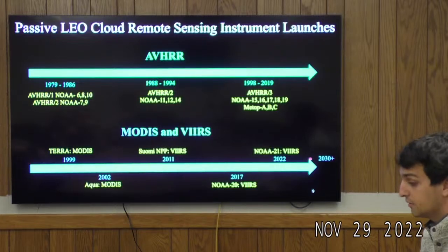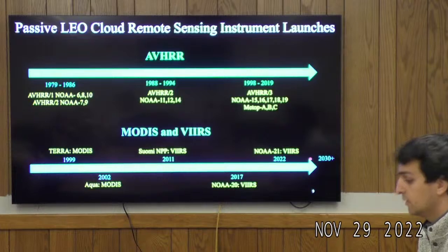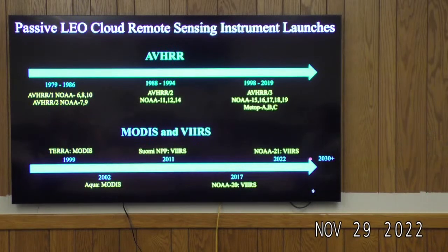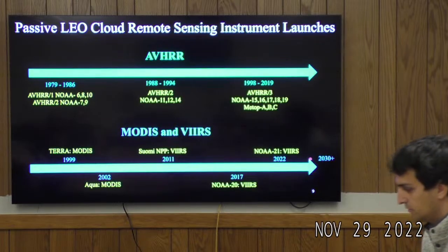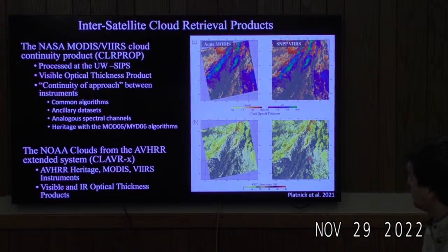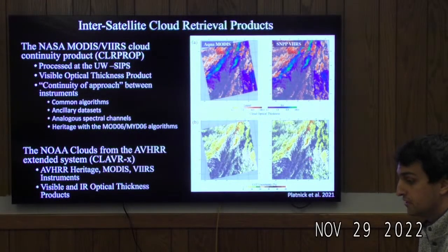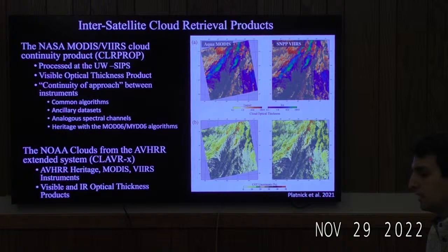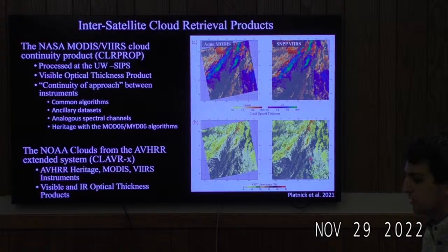The obvious candidate is VIIRS, which launched in 2011, 2017, and 2022, with the VIIRS data record set to extend into the 2030s. It becomes very advantageous to make an inter-satellite cloud retrieval product to hopefully investigate some of these cloud trends. That was the motivation behind the NASA MODIS-VIIRS cloud continuity product, which will be validated today. It's an inter-satellite cloud retrieval product processed at the UW-SIPS. It has a visible optical thickness product and utilizes continuity of approach between instruments—common algorithms, auxiliary data sets, analogous spectral channels—with heritage from the original MODIS Terra-Aqua algorithms.